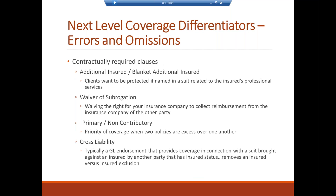Contractually required clauses: contracts often require these coverages to be in place. Additional insured — clients want to be protected if named in a suit related to the insured's professional service, so they ask to be added as an additional insured. Waiver of subrogation — waiving the right for the insurer to collect reimbursement from the other party's insurance company. Primary non-contributory — establishing priority of coverage when two policies are excess over one another. Cross liability — typically a GL endorsement providing coverage for suits brought by one insured party against another insured, effectively removing an insured-versus-insured exclusion.